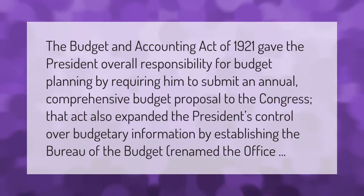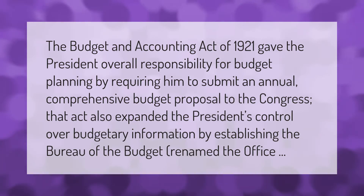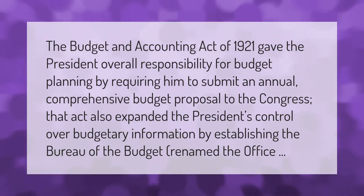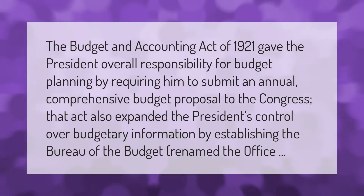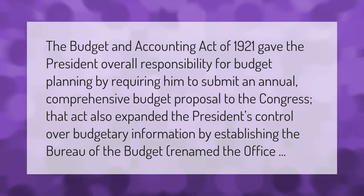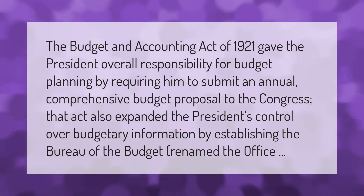The Budget and Accounting Act of 1921 gave the president overall responsibility for budget planning by requiring him to submit an annual comprehensive budget proposal to the Congress. That act also expanded the president's control over budgetary information by establishing the Bureau of the Budget, later renamed the Office of Management and Budget.